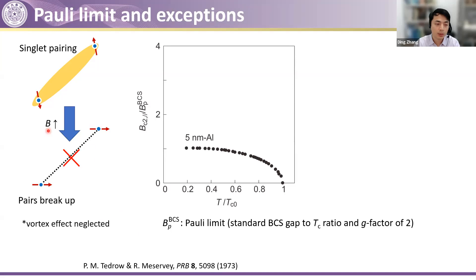Here we consider Cooper pairs with singlet pairing. If we do not consider the vortex effect — basically in 2D ultra-thin superconductors, if we apply the magnetic field in the plane, the orbital effect can usually be neglected. In this case, the magnetic field cannot generate any vortices, so the main effect is to polarize all the spins. Once all these spins get polarized, you break the Cooper pairs and kill superconductivity.